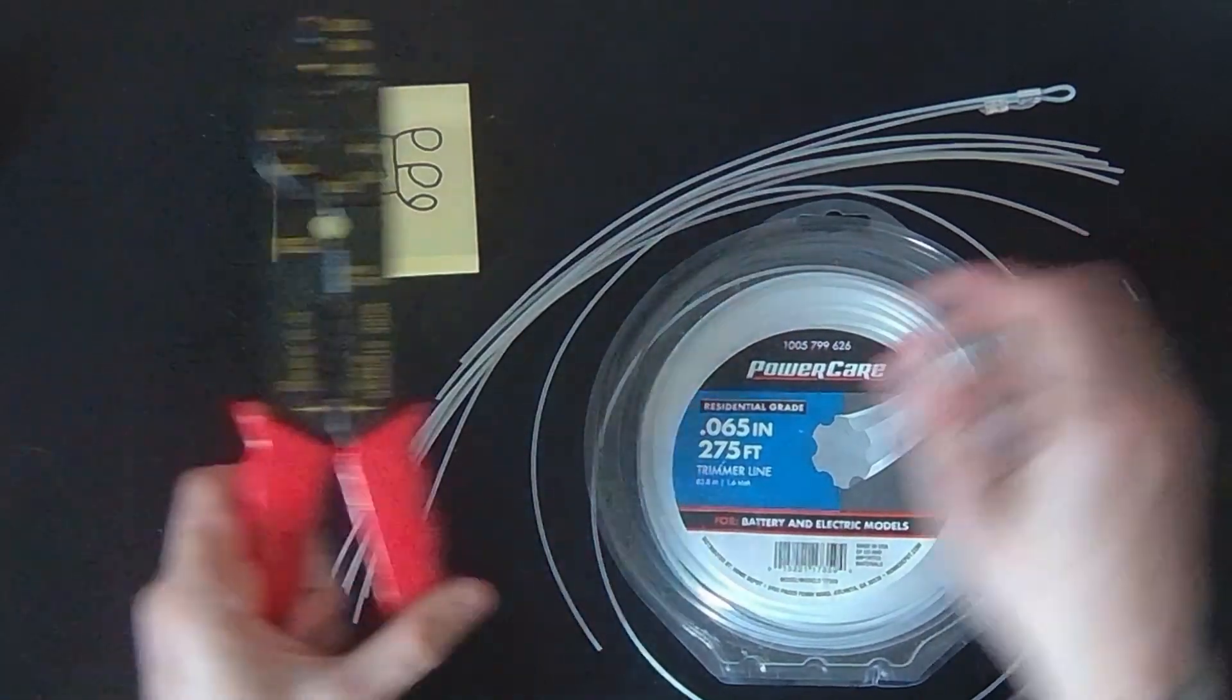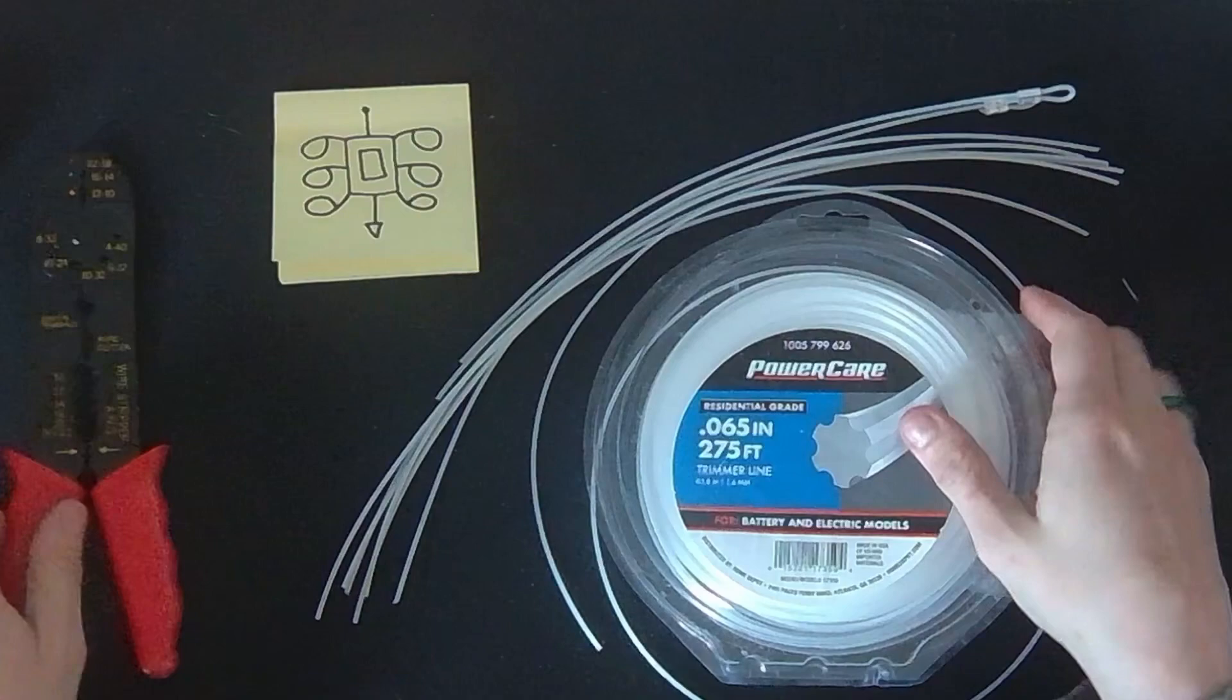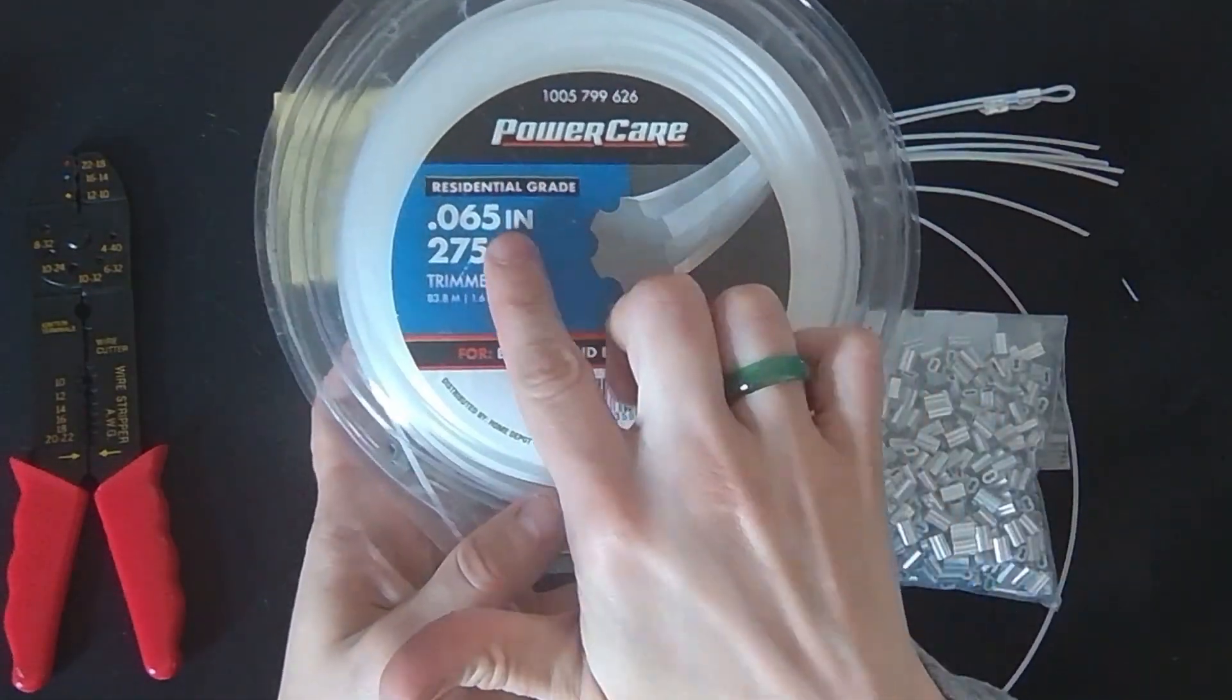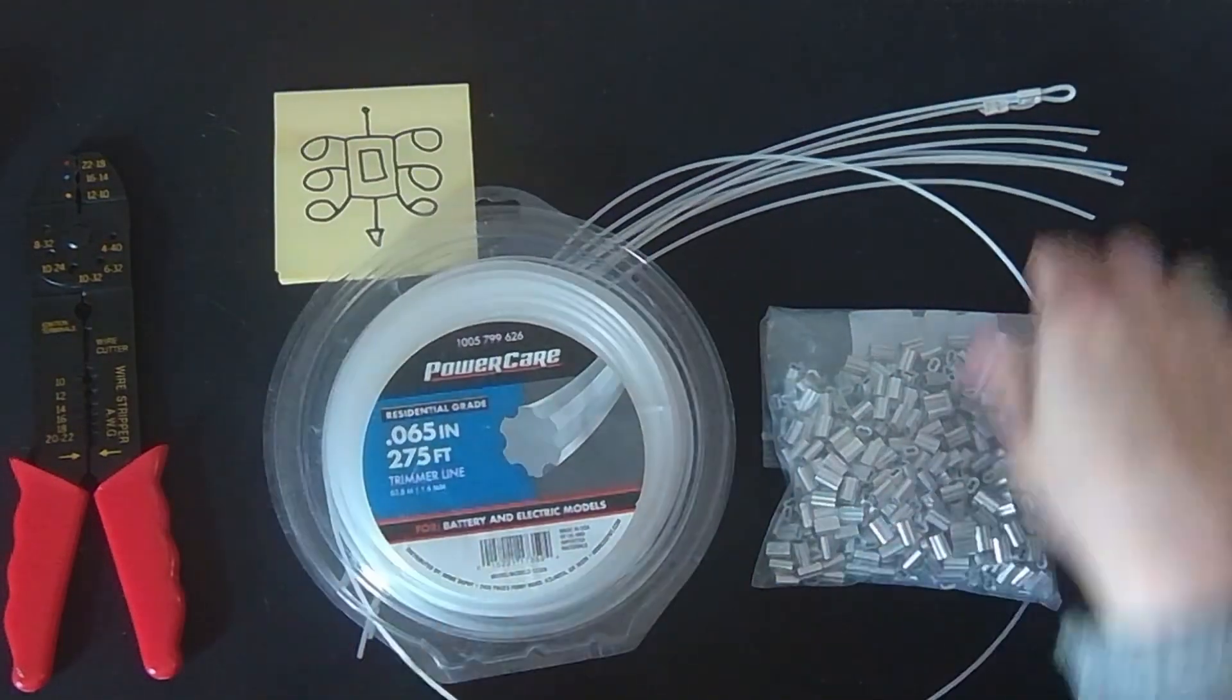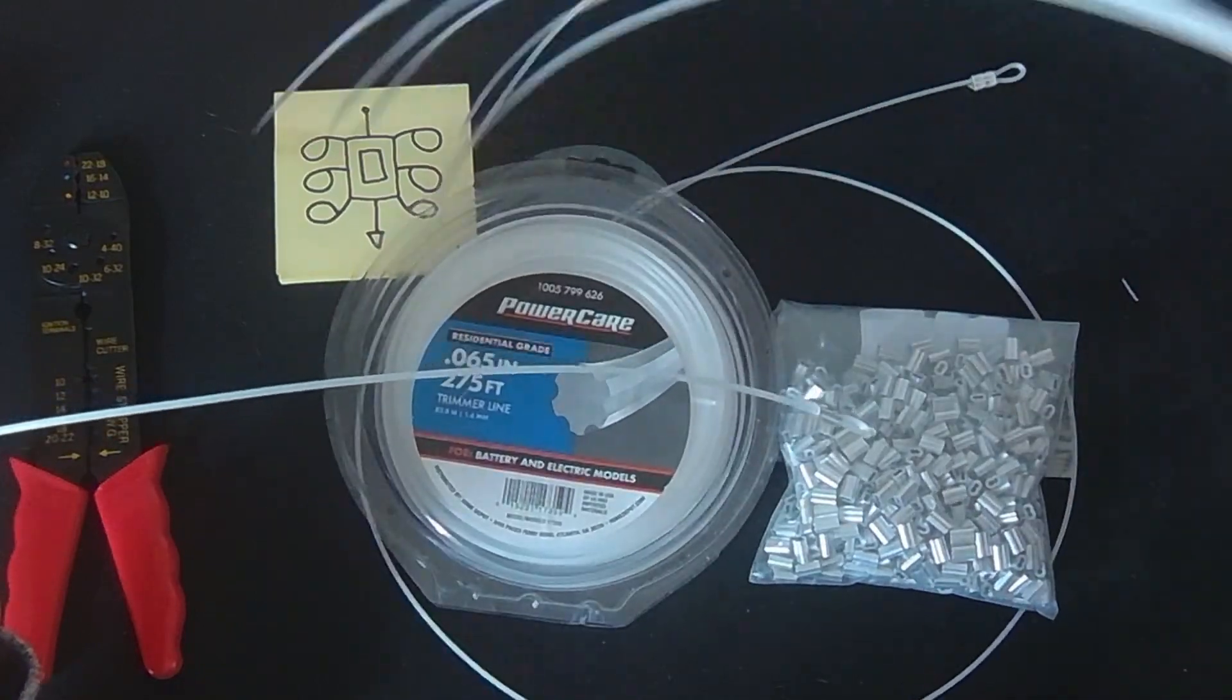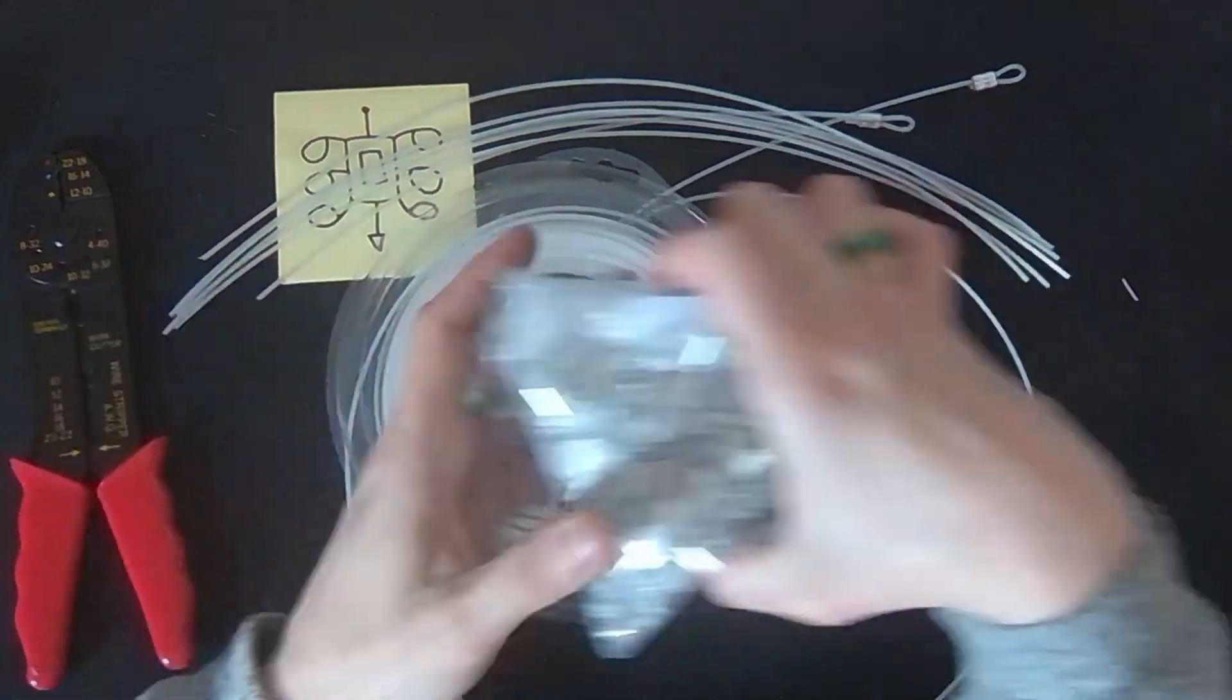These are the tools. There is an electrical crimper, and you can use whatever will crimp for you. And I used this 0.065 inch weed whacker cord, and this is what it looks like when it's finally prepared, because it comes out of the thing in a curve. It's all curled up.